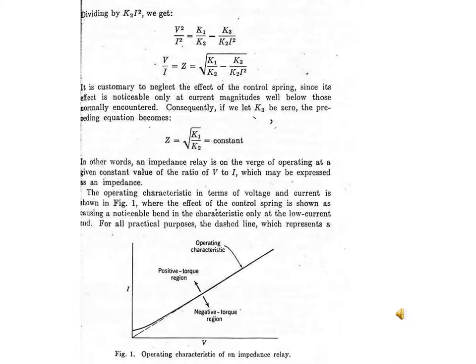If we let k3 be zero, the preceding equation becomes z equal to square root of k1 divided by k2 equal to constant. This is the impedance relay characteristic.